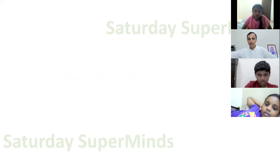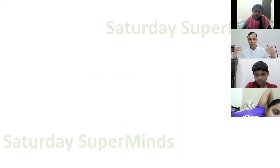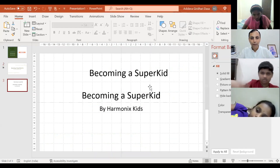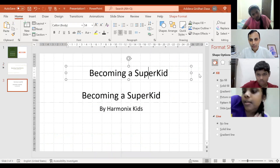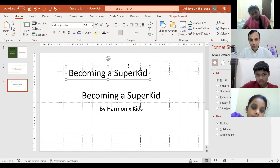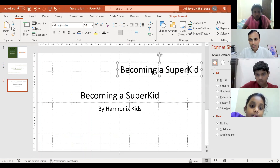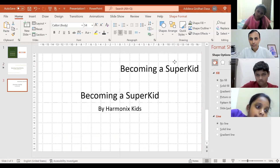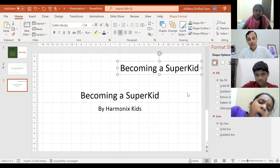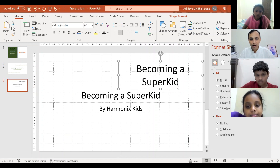The one on the top is starting from the right side, and the one at the bottom is starting from the left side. So I have to create two text boxes — one on the right side. Let me make it smaller. One on the right side and let me make it slightly bigger.